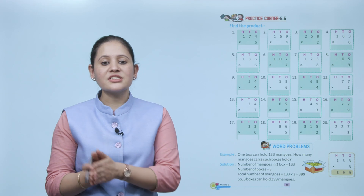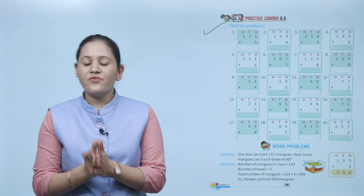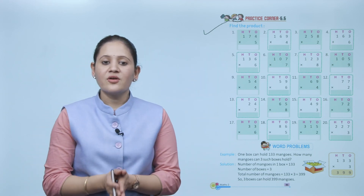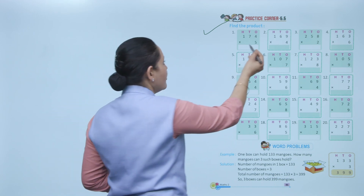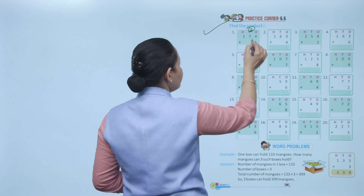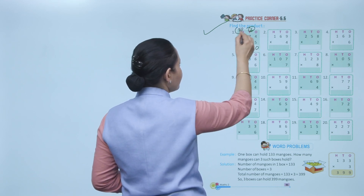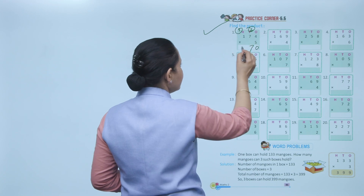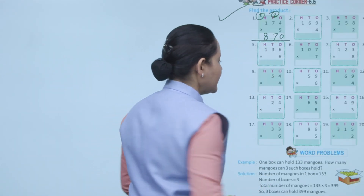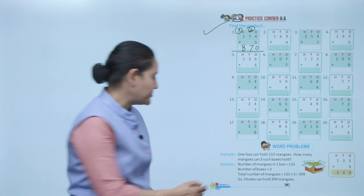Practice Corner 6.6: Find the product. 174 multiplied by 5 — start from ones: 5×4 equals 20, write 0 and carry over 2; 5×7 equals 35, plus 2 equals 37, write 7 and carry over 3; 5×1 equals 5, plus 3 equals 8. So the product is 870. Practice all the questions.